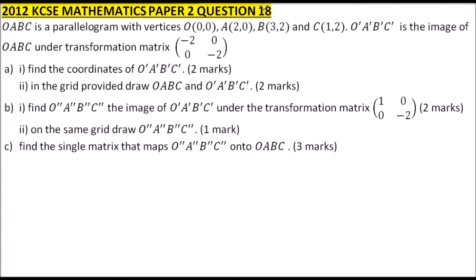Since this is a transformation through this matrix, what we need to do is multiply this matrix with the matrix formed using the coordinates of O, A, B, C. So we have O at (0,0), A at (2,0), B at (3,2), and C at (1,2).